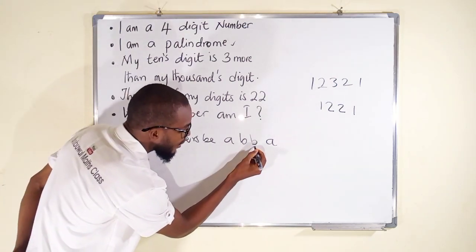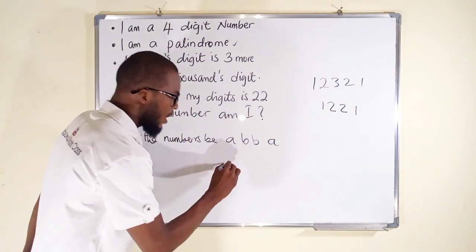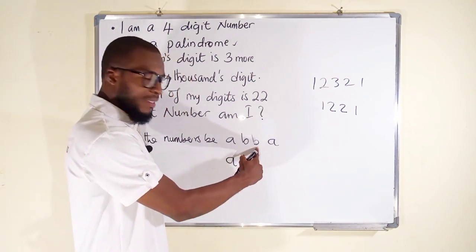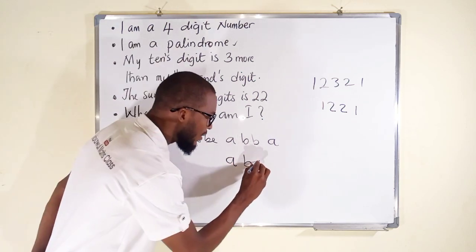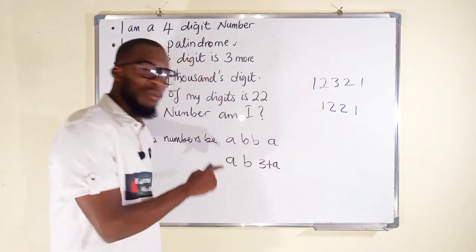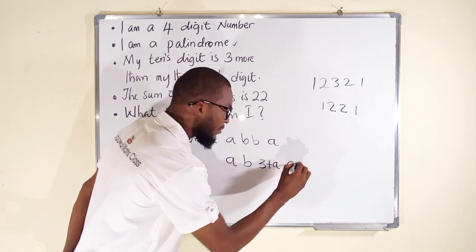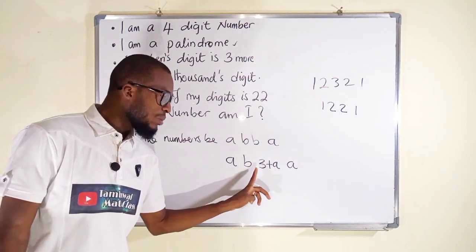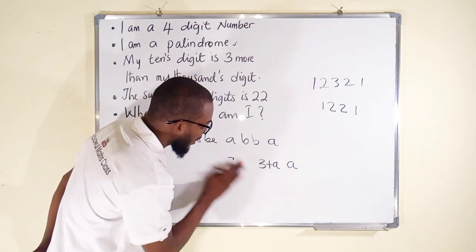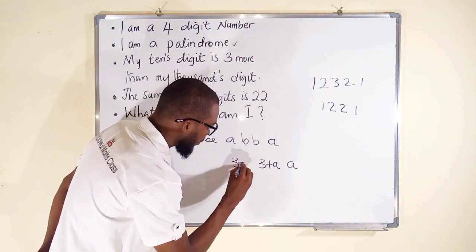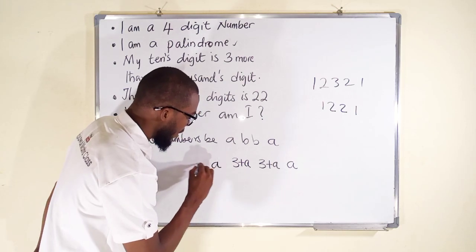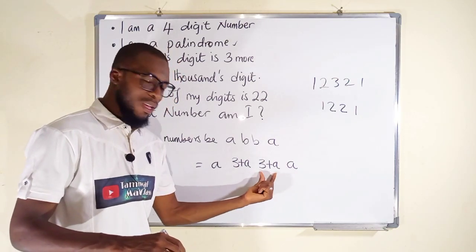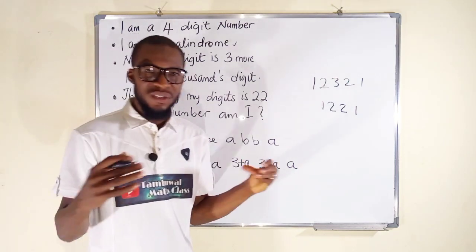Now, the tens digit is three more than the thousands digit. The thousands digit is A, so the tens digit B equals three plus A. Since the second and third digits must also be the same, the third digit is also three plus A. So our number in terms of A is: A, (3+A), (3+A), A — and in either way it must read the same.